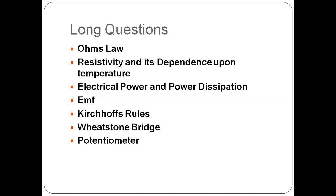The third long question is electrical power and power dissipation. In a cell, you give energy to charges, and when they go into the circuit, they dissipate energy in any resistor. We measured the formulas: P equals VI, I squared R, and V squared divided by R. These are the three formulas for power.